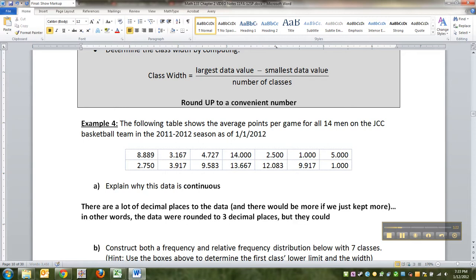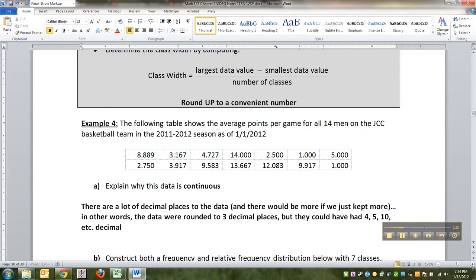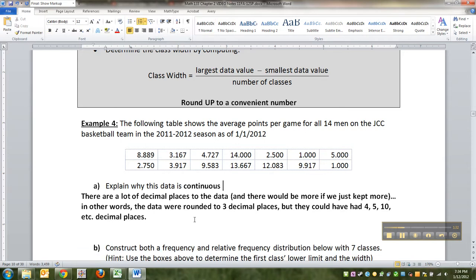But they could have had four, five, ten, et cetera, decimal places. In other words, the average number of points that a player has is a continuous variable.